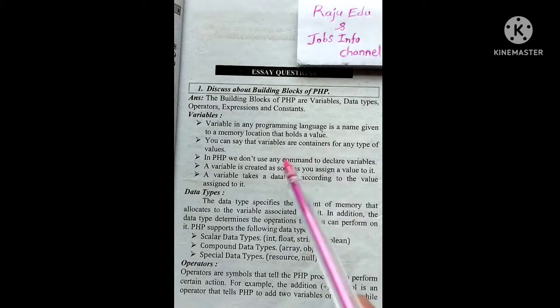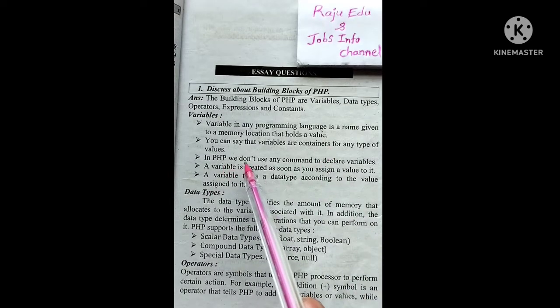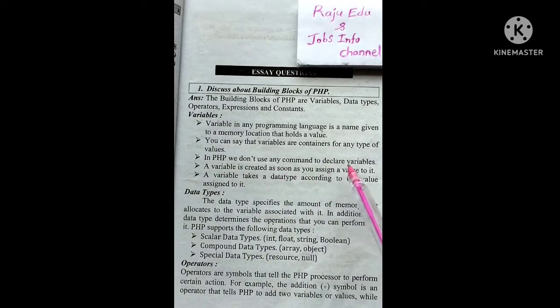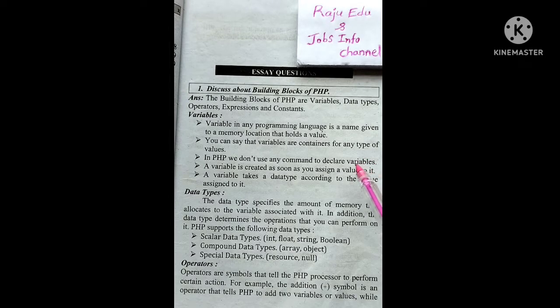In PHP, we don't use any command to declare a variable. In JavaScript we use the var keyword, or in C language we use data type followed by variable name. But in PHP, we don't use such keywords. A variable is created as soon as you assign a value to it.